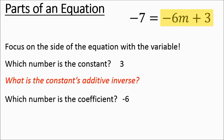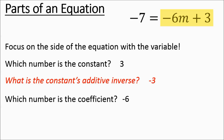The constant's additive inverse: the constant was a positive 3, so the additive inverse is going to be a negative 3. The coefficient was a negative 6, so the multiplicative inverse is going to be negative 1 sixth. If you don't remember multiplicative and additive inverse, you can go find one of the old videos covering those concepts.